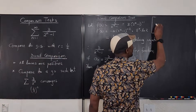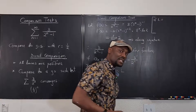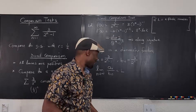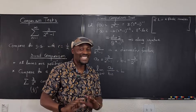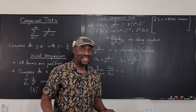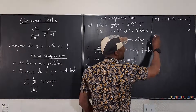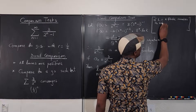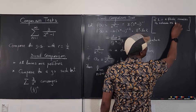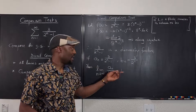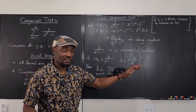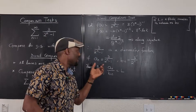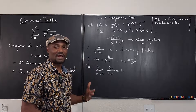If L is a finite number between zero and infinity, then both a_n and b_n will behave the same way — that's the easy way to remember it. So if b_n converges, a_n converges; if b_n diverges, a_n diverges. That's the core of the limit comparison test when you get a finite nonzero limit.